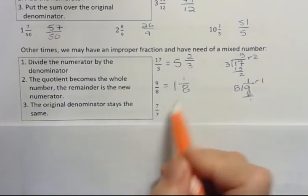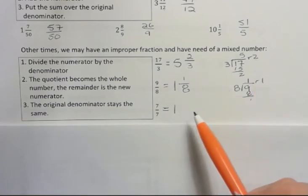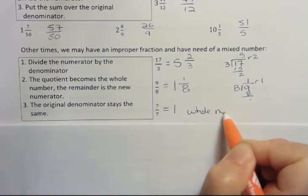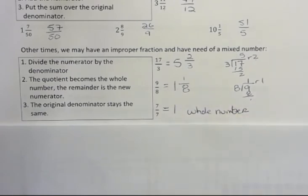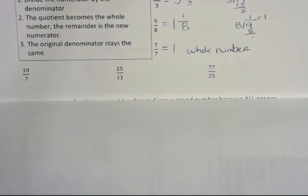And then 7 goes into 7 one time. And here's an example when we tried to change it to a mixed number, but it actually came out to be a whole number, which is totally fine. If we can get a whole number, we like to work with those. So that's totally fine if there's no remainder left over.